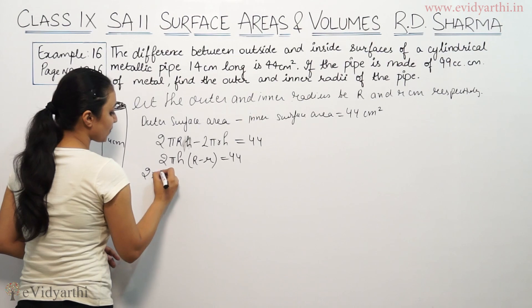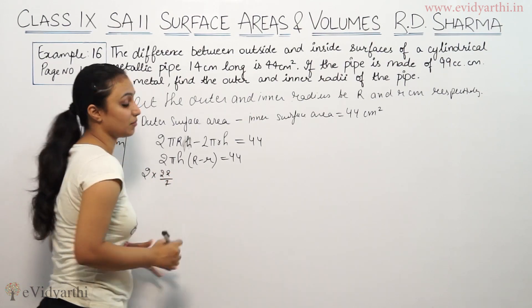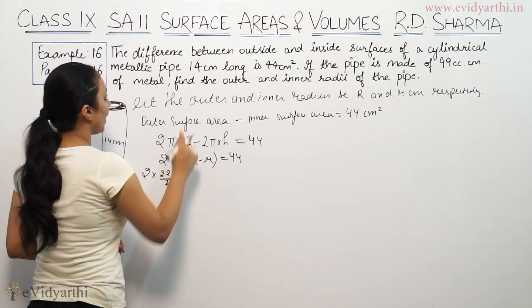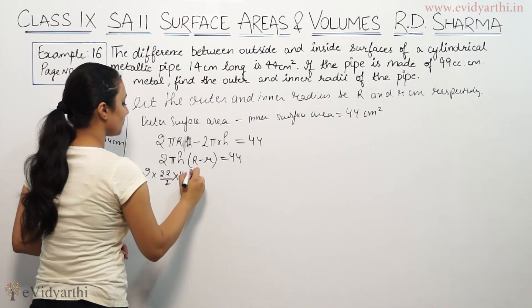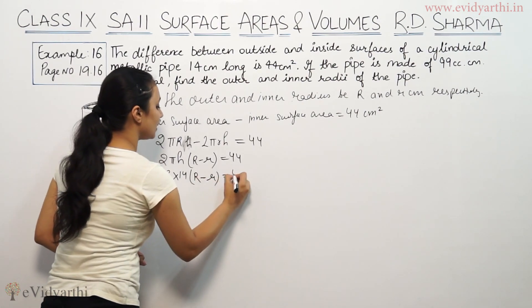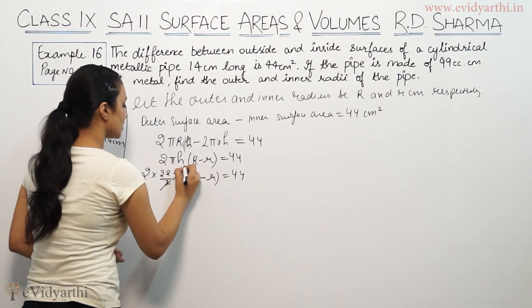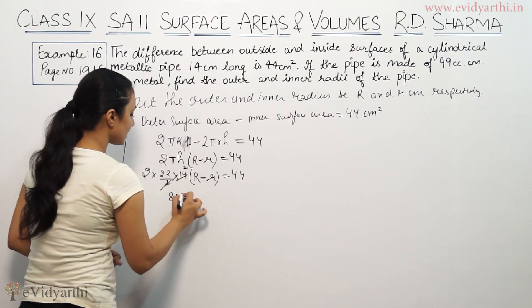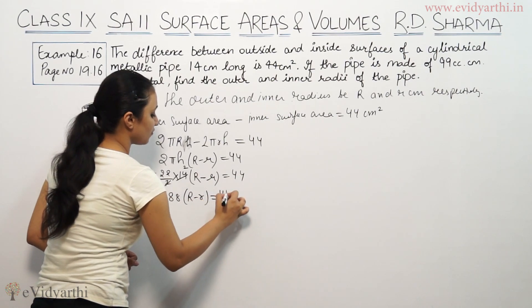So 2πh - we will put values. By default we will use 22/7 for π. Height is 14 cm. Now we have capital R and small r. This equals 44. 2s cancel, so 22 × 4 is 88.